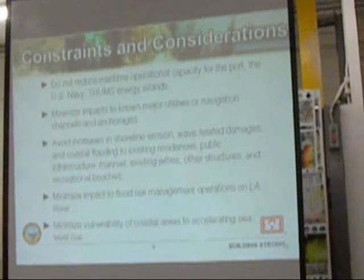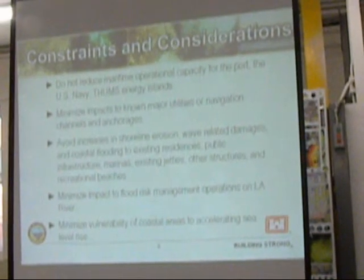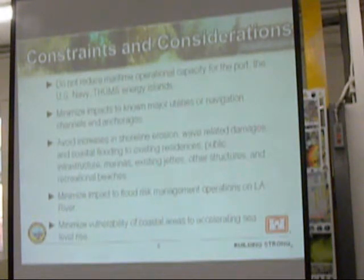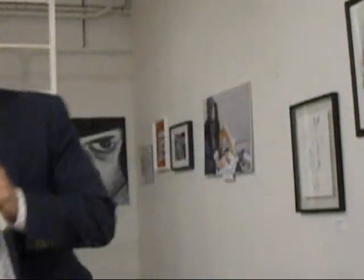There are some constraints and considerations that are important to frame the context of the study as a whole. We can't reduce the maritime operational capacity for the port, which includes the U.S. Navy and the Tums Energy Islands. We also want to minimize impacts to known major utilities, navigation channels, and anchorages, avoid any increase in shoreline erosion, wave-related damage, coastal flooding, and public infrastructure. We also want to minimize impacts to flood risk management and minimize vulnerability of coastal areas.